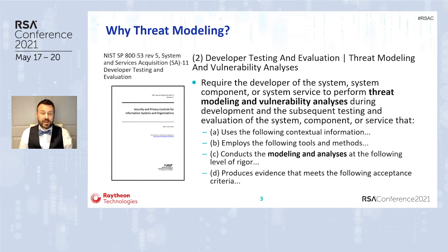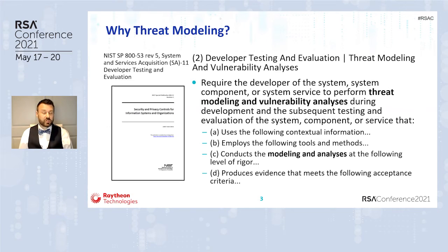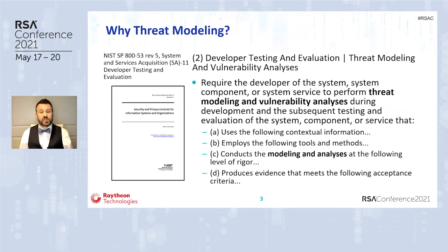I get to work in government-type work, so we focus on things such as the NIST Special Publication 800 series, and in the recent revision five, which is focusing on their security controls. We're going to talk about the cloud controls matrix, which is a similar set of controls. One of the things in there is Systems and Service Acquisition 11, Developer Testing and Evaluation, which focuses on really understanding your attack surface — how might your systems be attacked and how you might go about validating that.